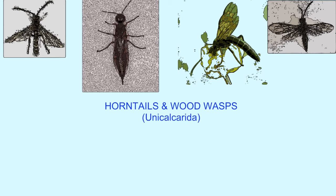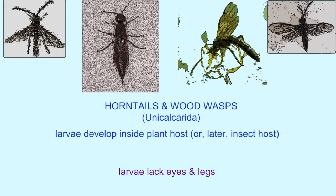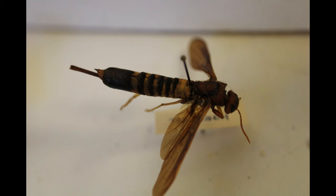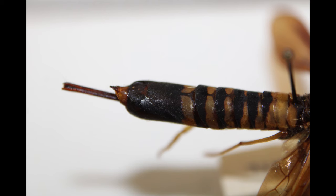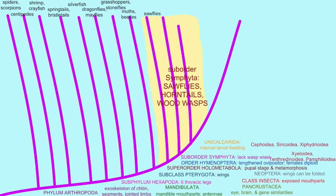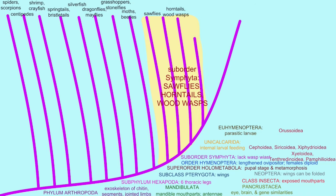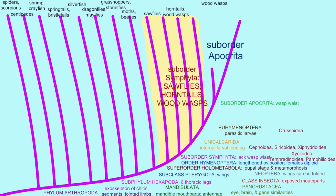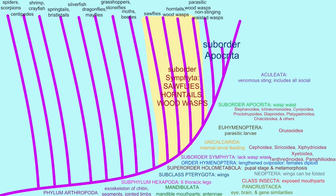In a group known as Unichalcarida, which includes bees, wasps, and ants, and also horntails and wood wasps, the larvae were changed so that they developed inside their host — at first a plant host in horntails and wood wasps, but later possibly an insect host. As a result, larvae lack eyes and legs as they develop inside this host.